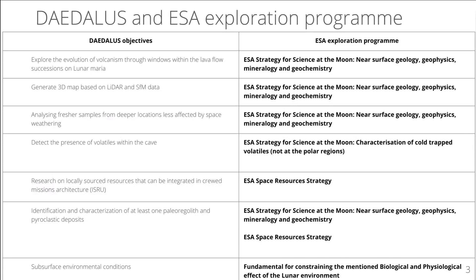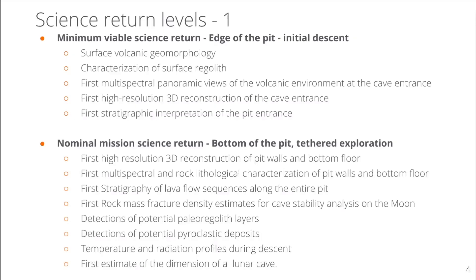We plan to identify and characterize at least one regolith and pyroclastic deposit, and explore subsurface environment conditions. The minimum viable science return level consists of reaching the edge of the pit and performing an initial descent, studying the surface volcanic geomorphology and characterizing the surface regolith. We perform a first multispectral panoramic view of the volcanic environment at the cave entrance, the first high-resolution 3D reconstruction of the cave entrance, and carry out a first stratigraphic interpretation.